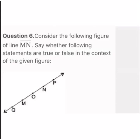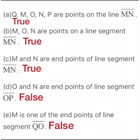Question 6: consider the figure of line MN and see whether the following statements are true or false. Statement 1: Q, M, O, N, P, R are points on line MN. This statement is TRUE. Observe the figure on page 75.